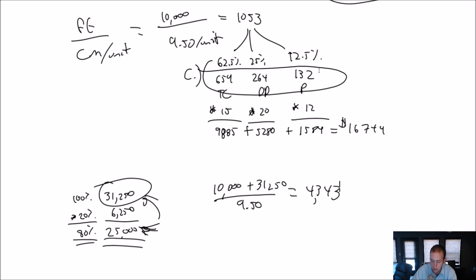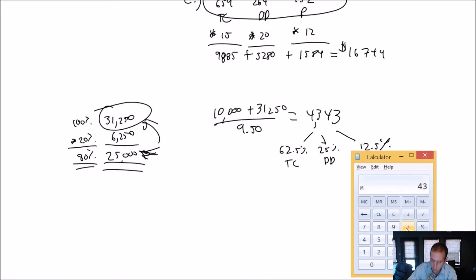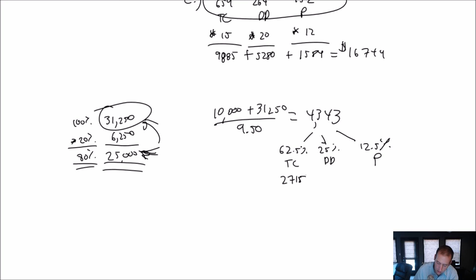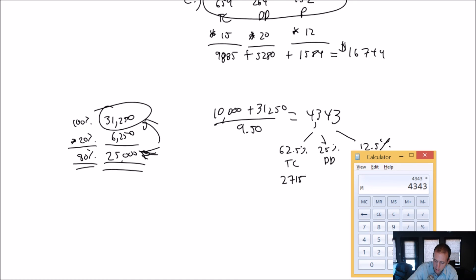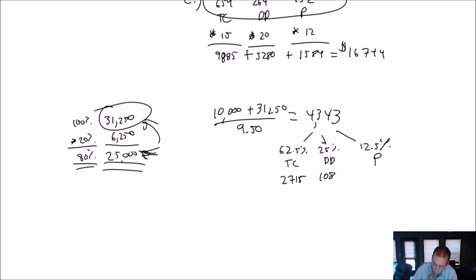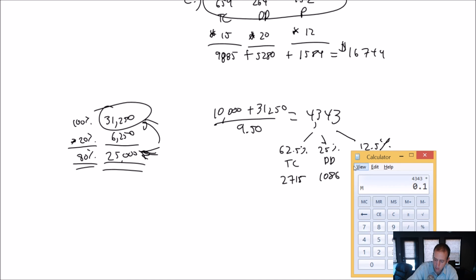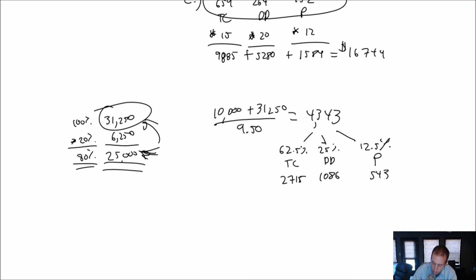Which 4,343 entrees? Well, it breaks down just the same. 62.5% of them are going to be thin crust. 25% of them are going to be deep dish, and 12.5% of them are going to have to be pasta dishes. So, let's crunch that number. 4,343 times 0.625. 2,715, rounding up, thin crust pizzas. 4,343 times 25%, 1,086 deep dish pizzas. And 4,343 times 0.125, 543 pasta dishes. So, that's the breakdown of which dishes I need to sell in order to make a target profit of 25,000. 31,250 before tax profit, but 25,000 after tax profit.